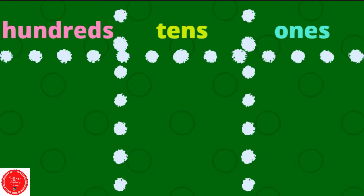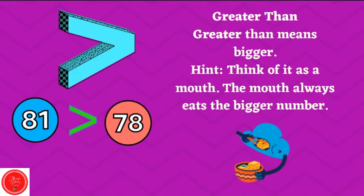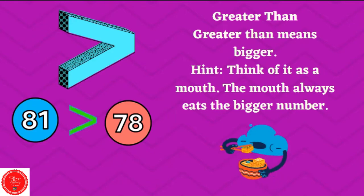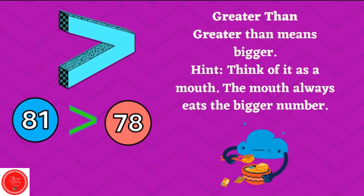Let's review our signs. This is the less than sign. Less than means smaller. 78 is less than 81. This is the greater than sign. Greater than means bigger. Think of it as a mouth. The mouth always eats the bigger number.